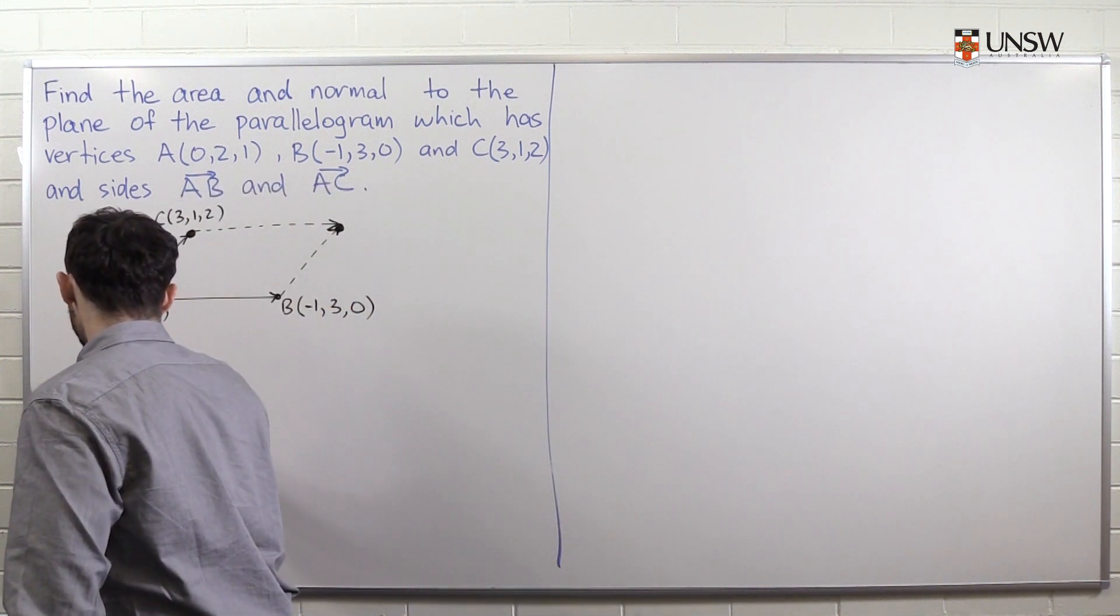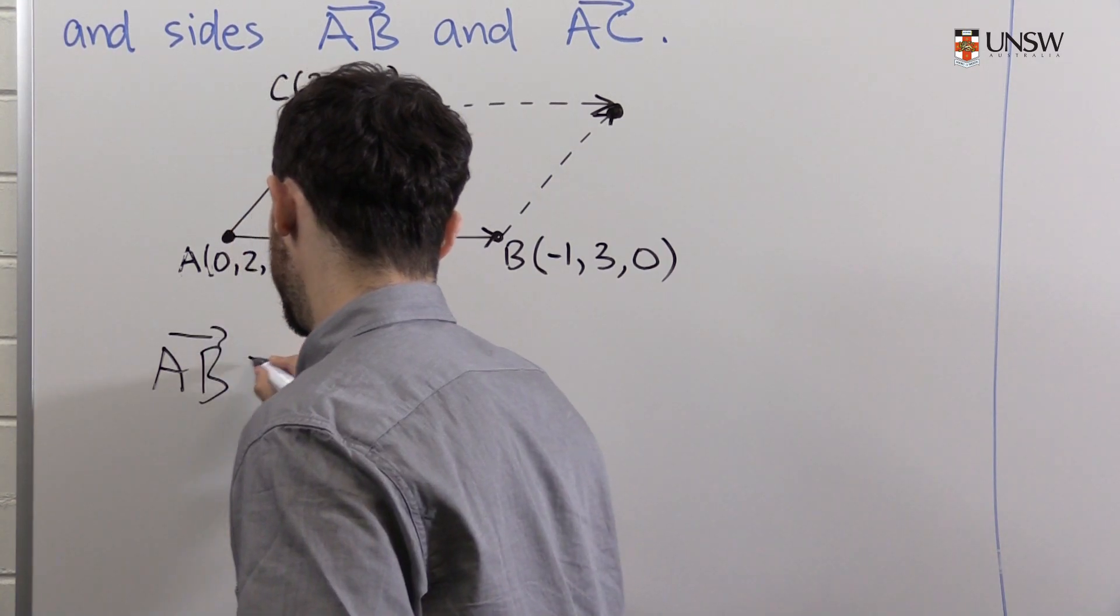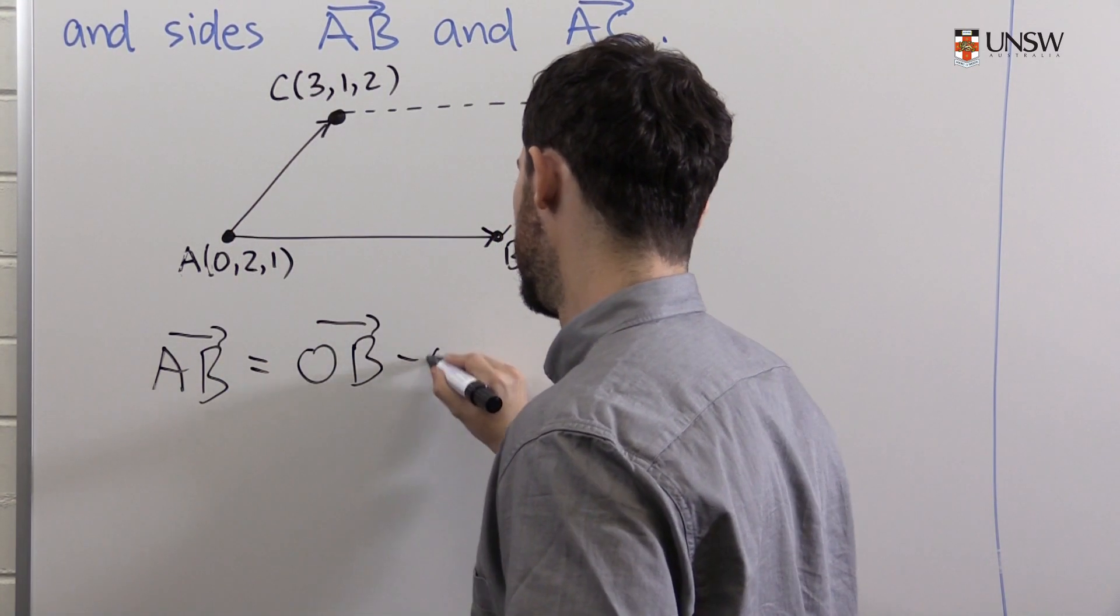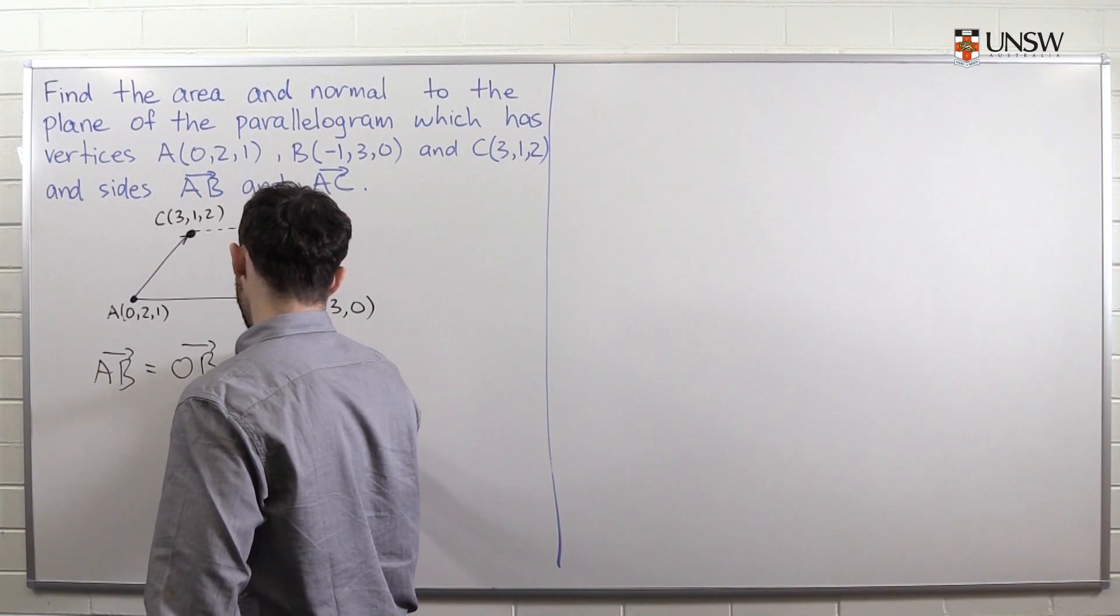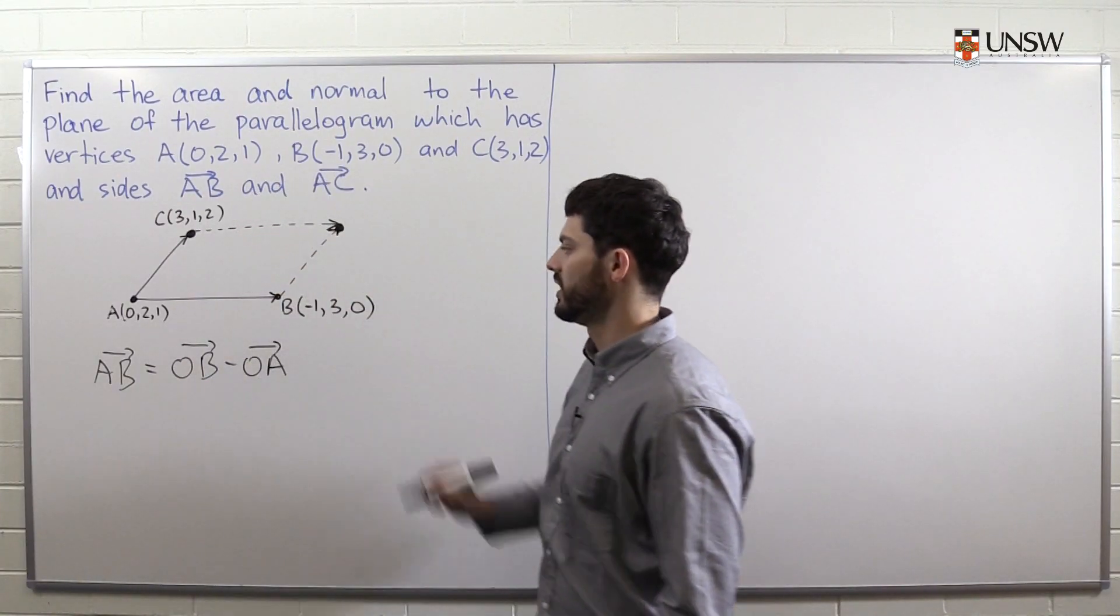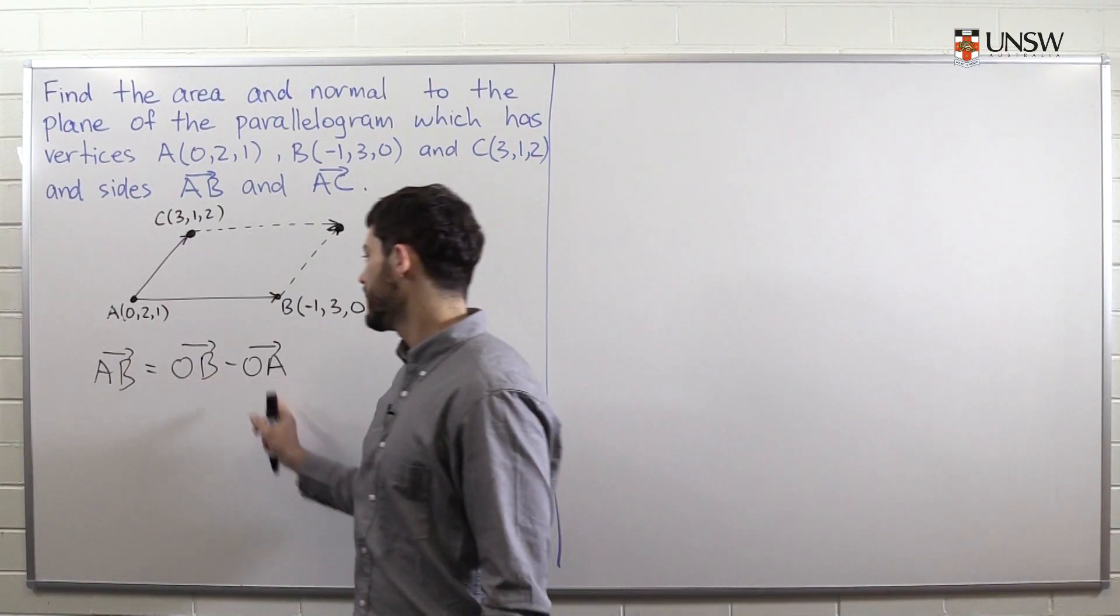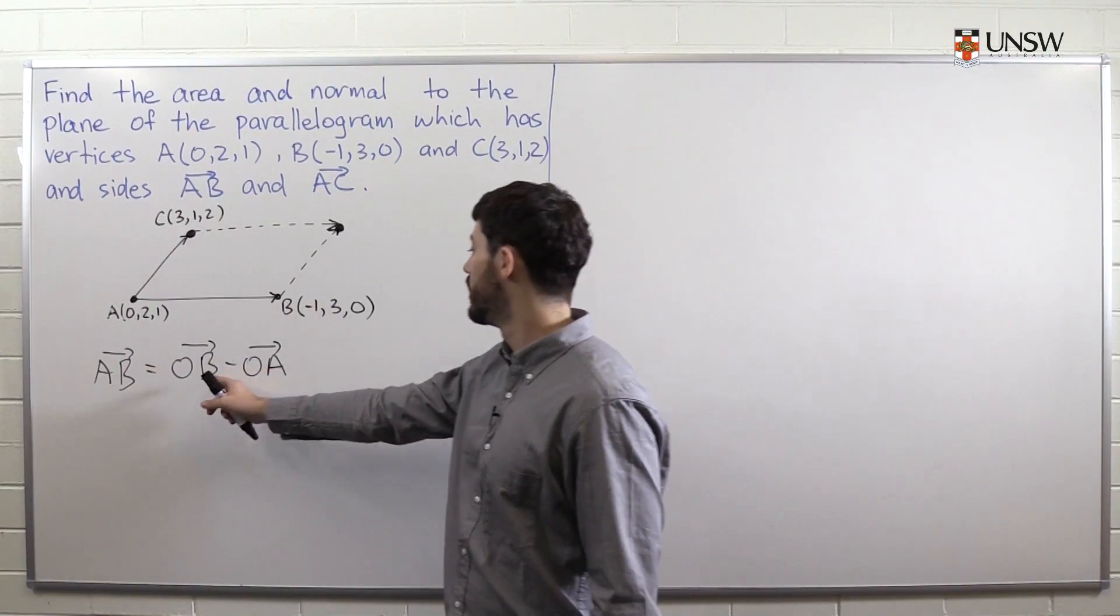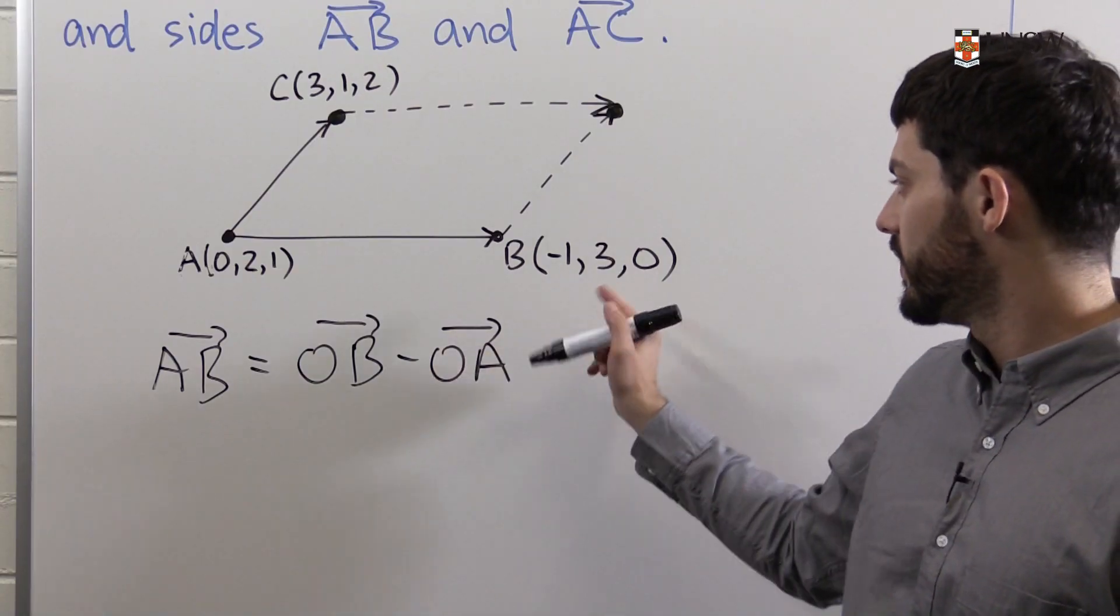So we find AB using the formula that AB is equal to OB minus OA. The O, of course, being the origin, which is not labelled here. And the reason we write it like this is because it's very easy to find OB and OA, because they're the coordinate vectors of B and A.